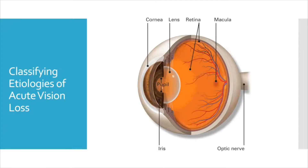Pathology that results in acute vision loss can be subcategorized into occurring in the media, the retina, or in the brain. Media processes typically cause more subacute vision loss, but some, such as vitreous hemorrhage or rapid onset endophthalmitis or uveitis, can lead to acute vision loss.